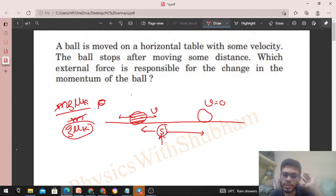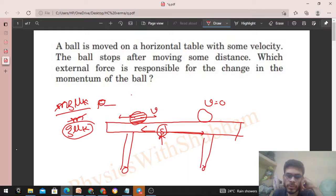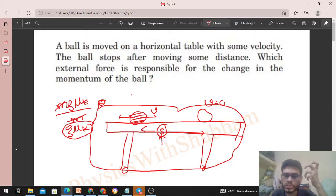So agar mein aisa system leta ho, maan lo yeh joh table hai isko bhi maine apne system mein include kar liya. Means ball plus table ab mera system hai. So table joh force laga raha hai is ball pe, that will be an internal force, right? Ab mera joh system hai, ball plus table hai. So system ka ek part dusre part pe joh force lagata hai, that is an internal force.